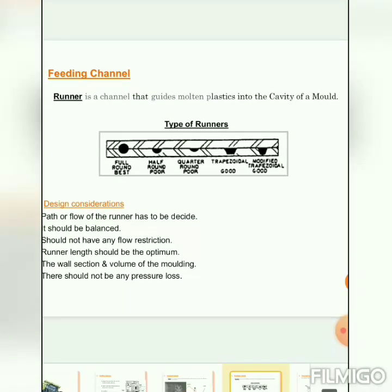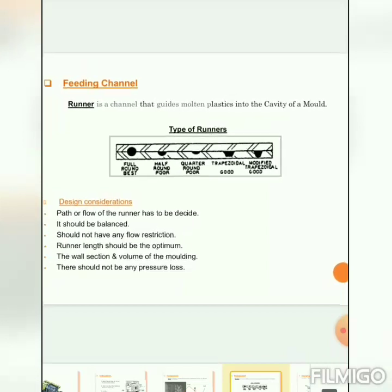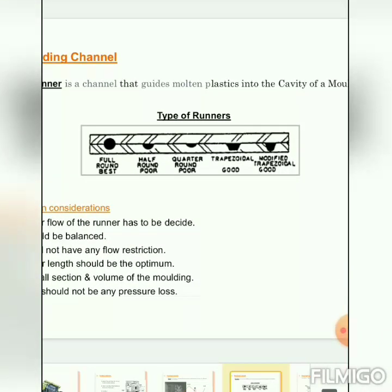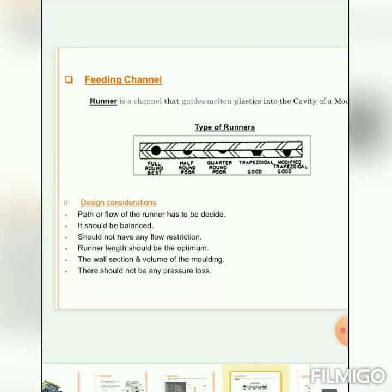The runner is a channel that guides molten plastic into the cavity of the mold — defining the path for molten plastic to flow into different cavities or different areas of the component. Design considerations: the path or flow of the runner must be decided — it should be balanced with no major restrictions, the runner length should be optimum relative to the wall sections and volume of the molding, and there should be no pressure loss.